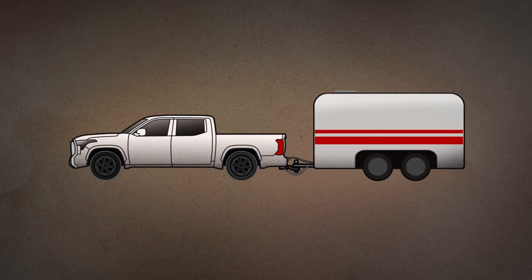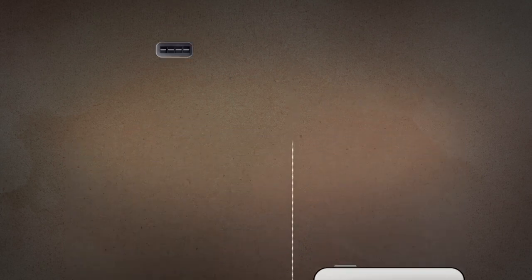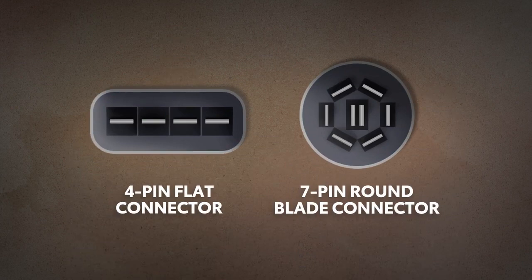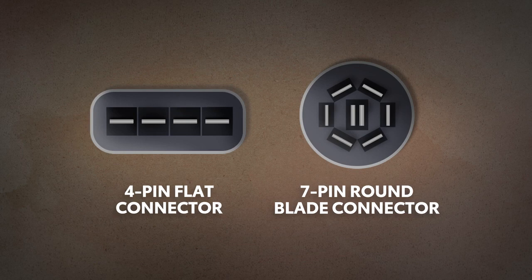Vehicles and trailers have different types of electrical connectors. Most commonly, Toyota vehicles use either a four-pin flat connector for lighter-duty towing, or a seven-pin round blade connector for vehicles designed for pulling heavier loads. It's essential the vehicle and trailer connector be compatible with each other for proper operation, and never try to tow a trailer without making this crucial connection.